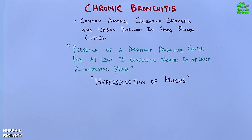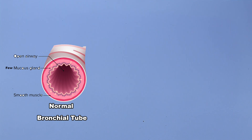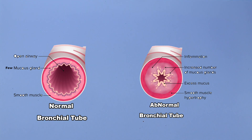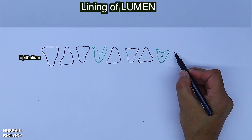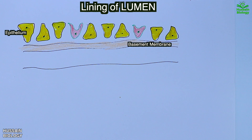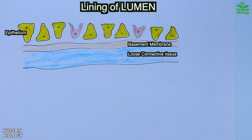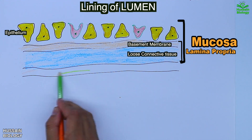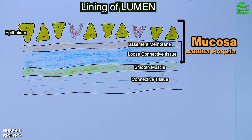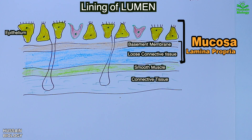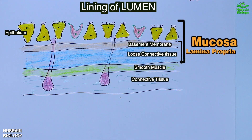As seen in the diagram, on the left we have the normal bronchial tube with a normal open airway and normal mucus glands, and on the right the abnormal bronchial tube which is inflamed with an increased number of mucus glands secreting excess mucus. The bronchial wall consists of epithelial cells with goblet cells in between, a basement membrane, loose connective tissue forming the lamina propria, smooth muscle, and connective tissue containing bronchial mucinous glands that secrete mucus through a duct into the epithelium.